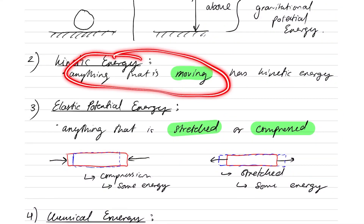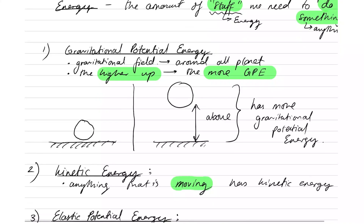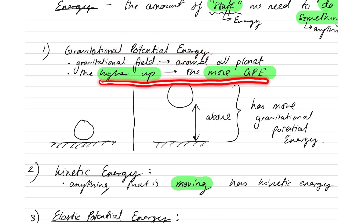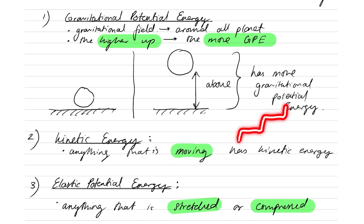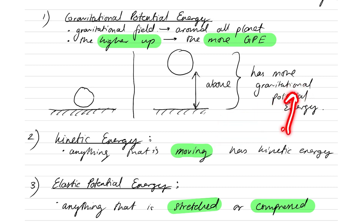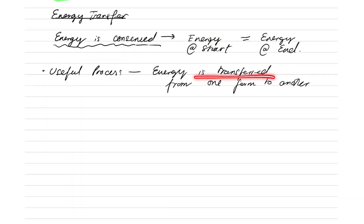If I have kinetic energy — anything that is moving — being transferred into gravitational potential energy — something moving up — this is simply the same as a person moving with some velocity going up some stairs. Because this person is moving up the stairs, they're using their kinetic energy to gain height. So this is kinetic energy being transferred into gravitational potential energy, and that is a useful energy transfer process.